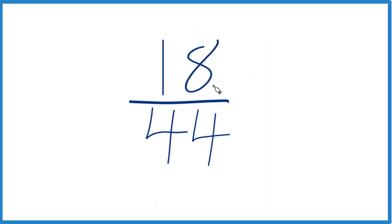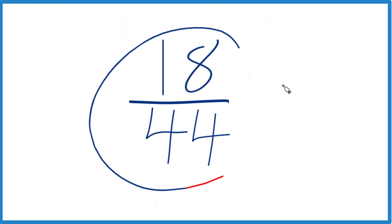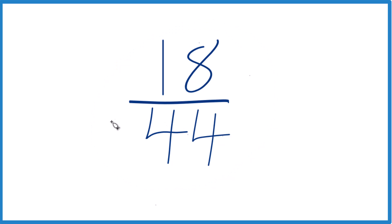Let's simplify the fraction 18/44. How do we get that to lowest terms? We need to find a factor that goes into both 18 and 44 evenly — we're looking for a whole number. We call this a common factor, and what we want is the greatest common factor.